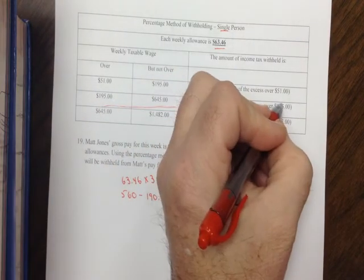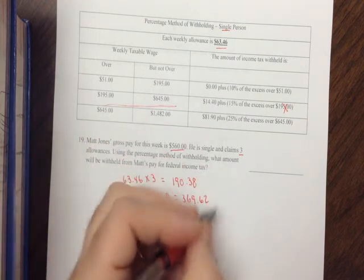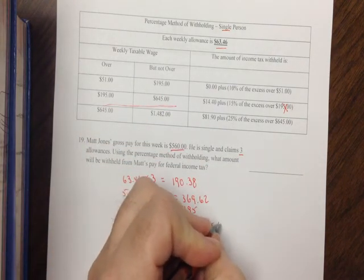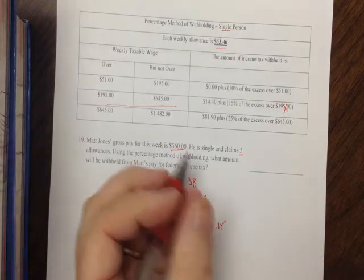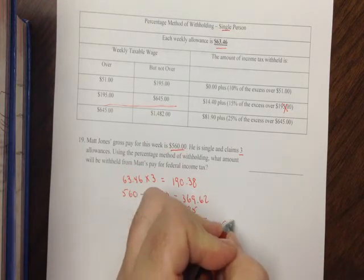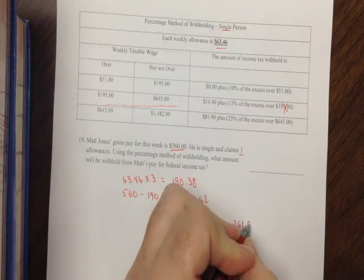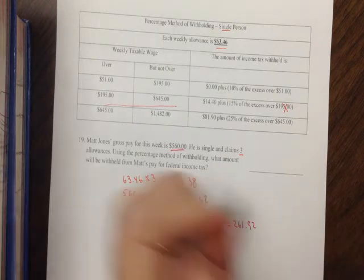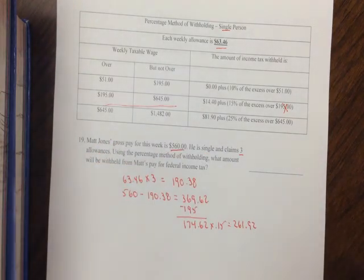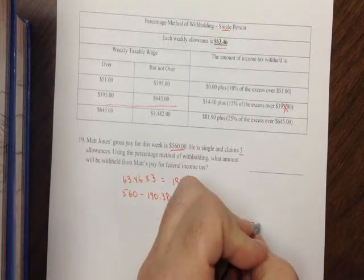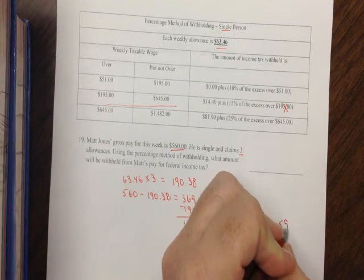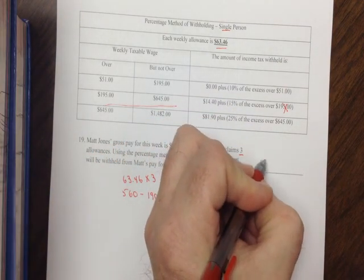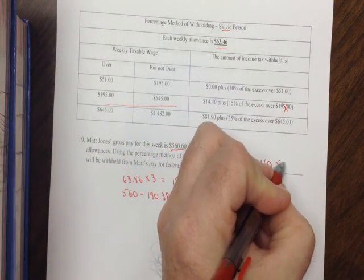We then take this and multiply it by 15%, and add $14.40 to it, which gives us $40.59. So that is our answer for how much comes out for this week.